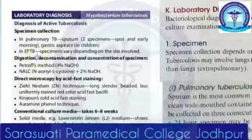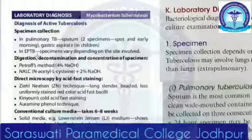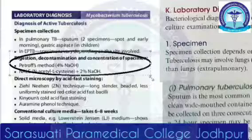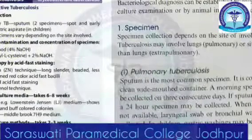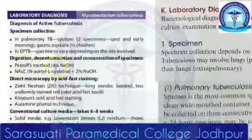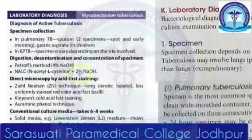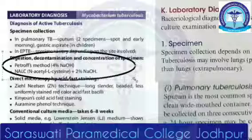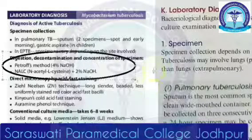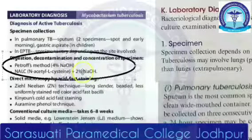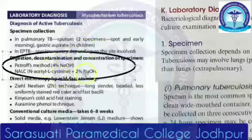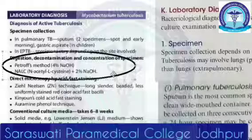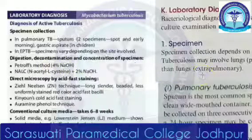Once you have collected the specimen, concentration of the specimen becomes important. There is something called digestion, decontamination, and concentration of specimen. There are two methods: Petroff's method, and NALC — that is N-acetyl-L-cysteine plus 2% NaOH. In Petroff's method it is 4% NaOH.